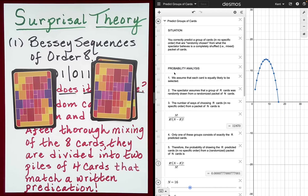You'll probably recognize this as the formula that gives you the number of combinations of N objects taken R at a time. Now, of course, only one of these groups consists of exactly the R predicted cards. Therefore, the probability of drawing the R predicted cards in no specific order from a randomized packet of N cards is going to be one divided by the above quantity, which will simply flip the fraction.